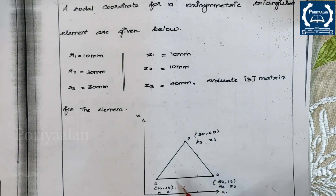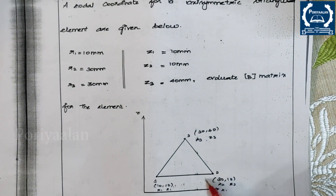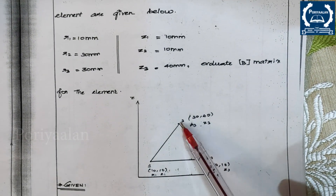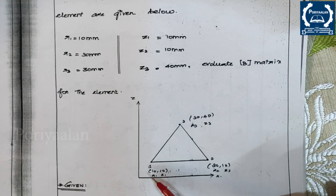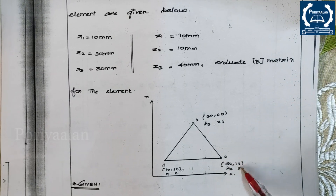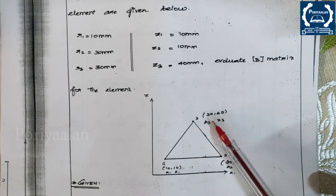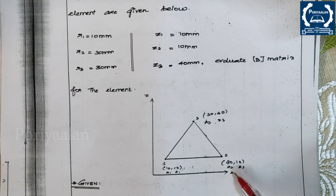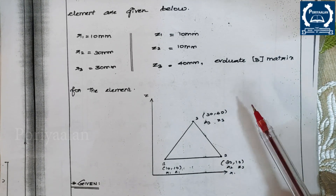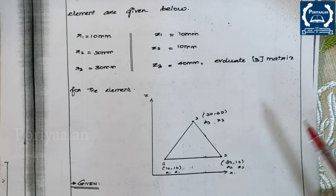The given coordinates are: R1 = 10 mm, R2 = 30 mm, R3 = 30 mm, Z1 = 10 mm, Z2 = 10 mm, and Z3 = 40 mm. These values correspond to nodes 1, 2, and 3, with R1,Z1 for node 1; R2,Z2 for node 2; and R3,Z3 for node 3.